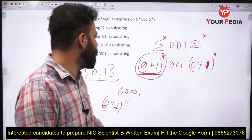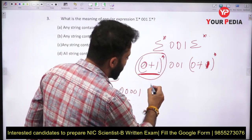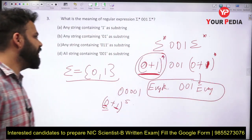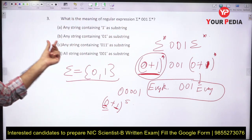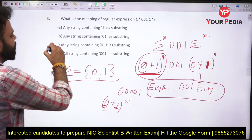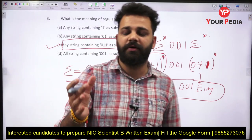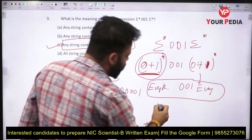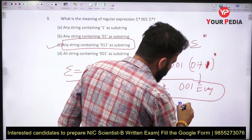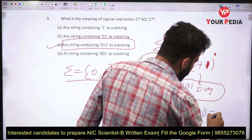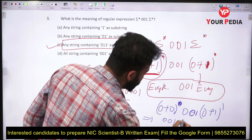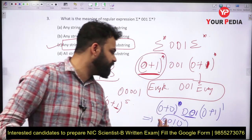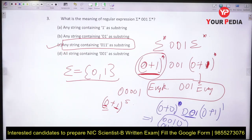Every string possible is present in this superset. So the expression Δ*001Δ* means you can have anything before and anything after, with 001 fixed in the middle. It represents any string containing 001 as a substring. For instance, if you take the first star as 0, you get strings starting with 001, and appending any combination of 0s and 1s after — like 0010 or 0011. Both have 001 as their substring. So the expression covers all strings containing 001 as a substring.